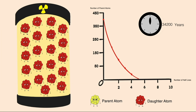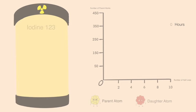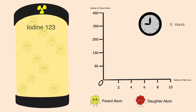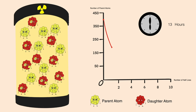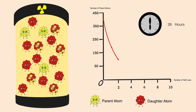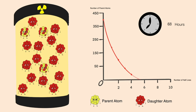Now let's quickly look at another nucleus: iodine-123. This has a half-life of only 13 hours. So it will still take six half-lives to reach 1% unstable nuclei, but it will do this much quicker — in only 78 hours.